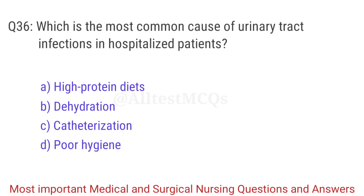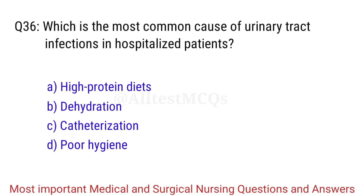Q36. Which is the most common cause of urinary tract infection in hospitalized patients? The right answer is Option C: Catheterization.